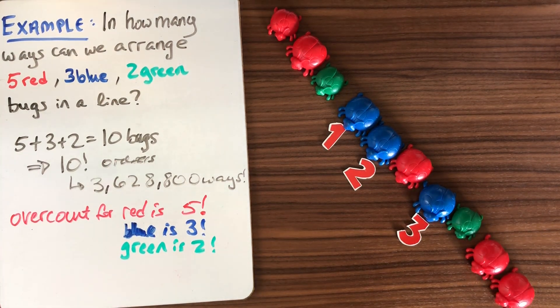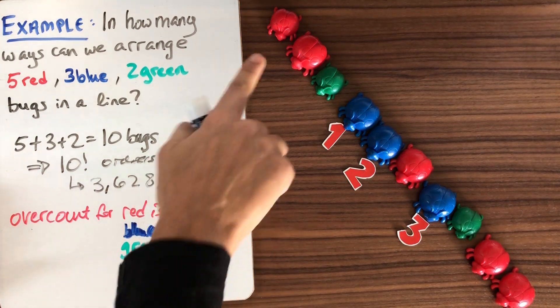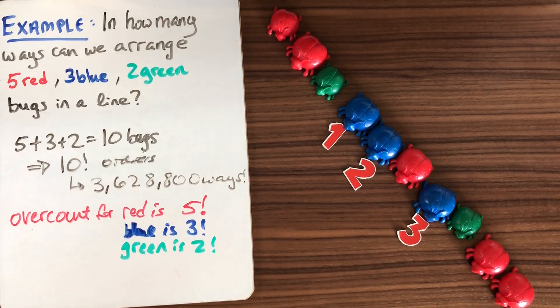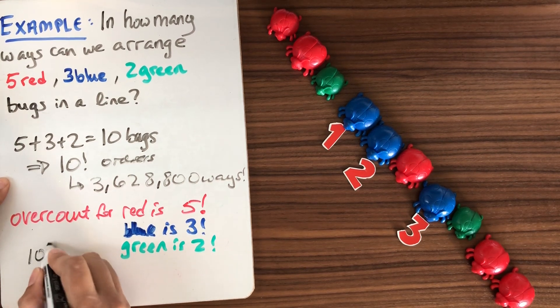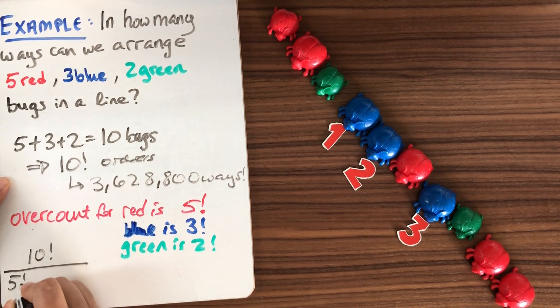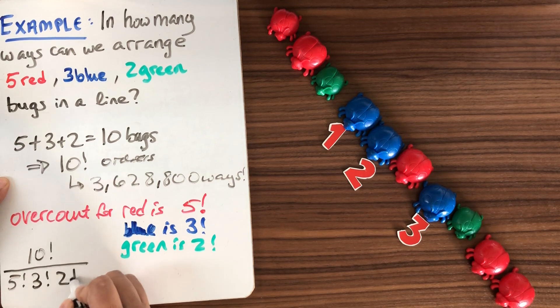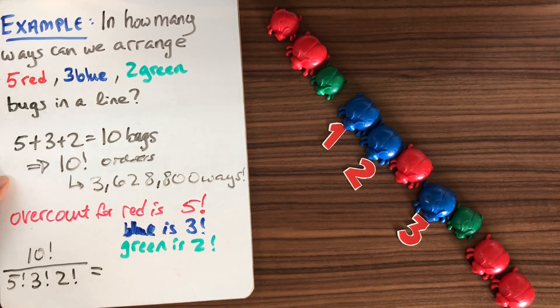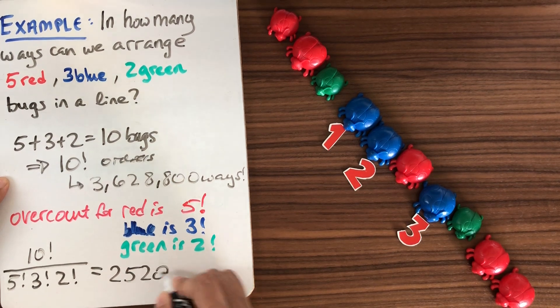So if I count this up in total, what's my overcount? It's the product of all of these because I've overcounted the red and the blue and the green. So the total number of bugs that I'm going to get is 10 factorial divided by my overcount of 5 for the red, 3 for the blue, and 2 for the green. And when I work out what this is, this is going to be 2,520 ways.